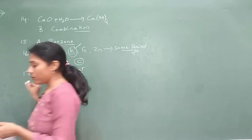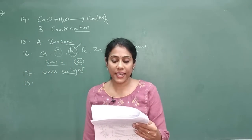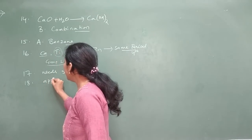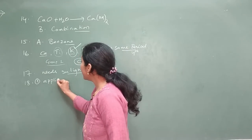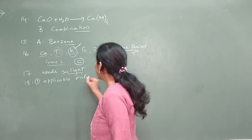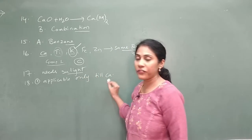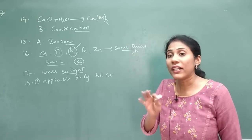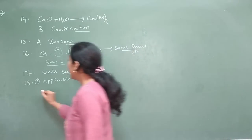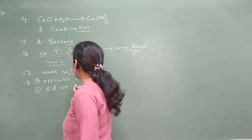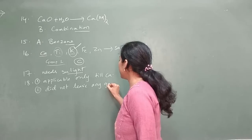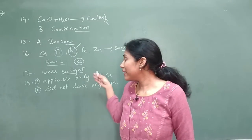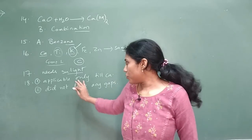Question 18: mention two limitations of Newland's classification of elements. First point: the theory is applicable only till calcium — after calcium, the principle that every eighth element is similar to the first one does not apply. Second point: Newland did not leave any gaps in his periodic table for newly discovered elements, which is another limitation.